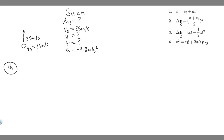Let's start with A: how high does it rise? When they say how high, they're talking about a distance, so we're trying to find delta Y. We only have V sub 0 and A — but there's a variable told indirectly. When something reaches its highest point, think about it: if it goes all the way up, once it's at its highest point, its speed is zero. Its final velocity is zero because at the highest point it's momentarily stuck in midair.